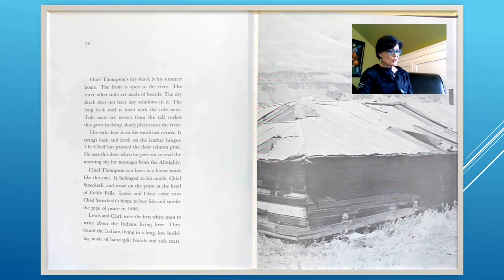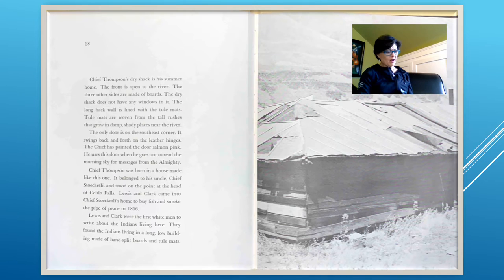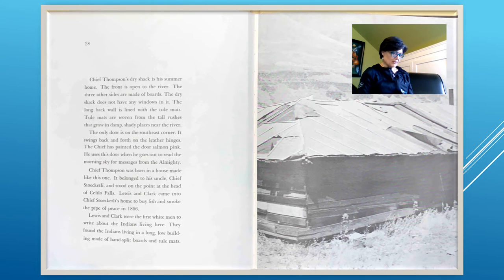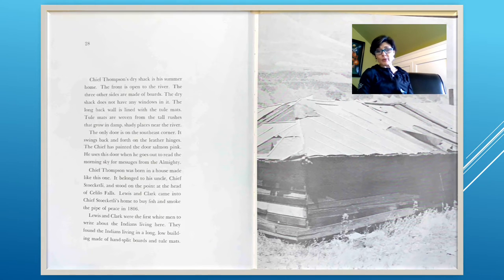Chief Thompson's dry shack is his summer home. The front is open to the river; the three other sides are made of boards with no windows. The long back wall is lined with tule mats — woven from tall rushes that grow near the river. The only door is on the southeast corner, swinging on leather hinges, painted salmon pink. The chief uses this door when he goes out to read the morning sky for messages from the Almighty. Chief Thompson was born in a house like this. Lewis and Clark came into his uncle Chief Stoketly's home to buy fish and smoke the Pipe of Peace in 1806.